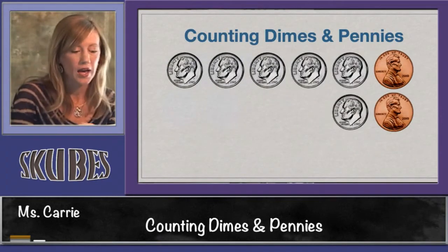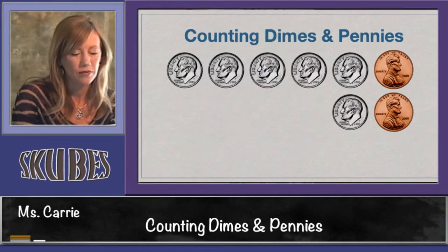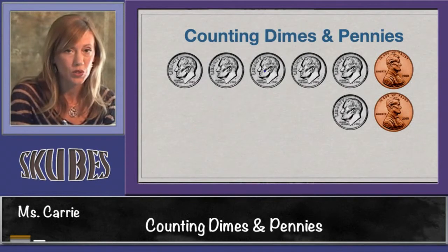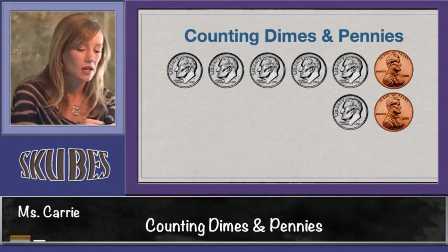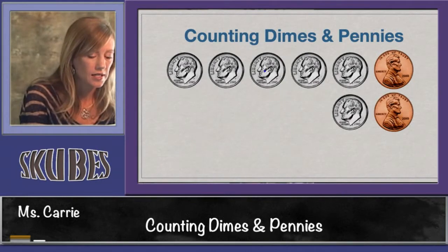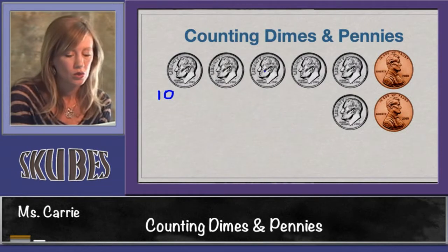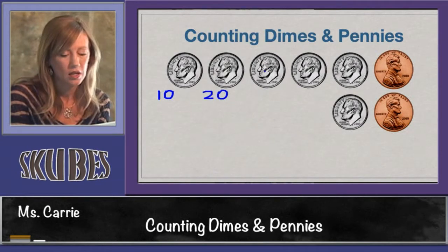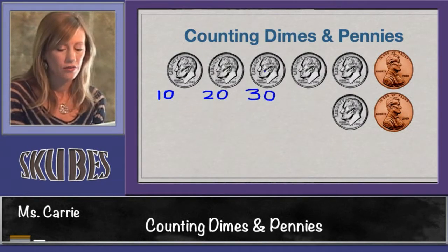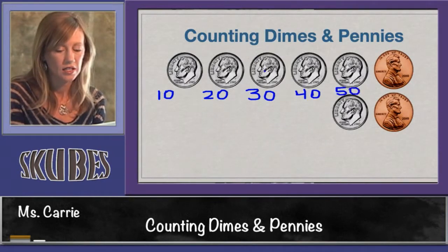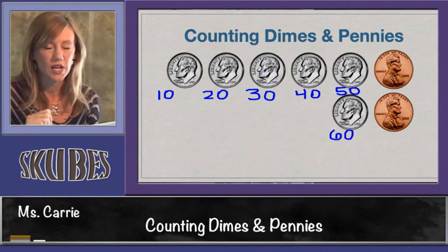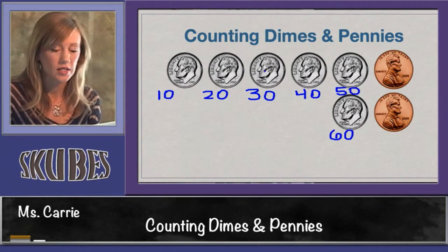This group has six dimes and two pennies. Start off counting by tens: ten, twenty, thirty, forty, fifty, sixty. We're done with our tens, so let's switch to ones: sixty-one.